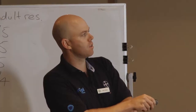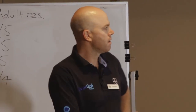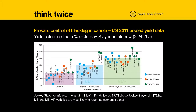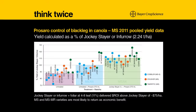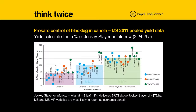If we compare everything to a percentage relative to having jockey stayer on the seed — taking that as our 100% for yield — we had an average of 2.24 tonnes across all these sites, which were MS varieties in 2011. We lost yield for doing nothing at all. Putting Prosaro on by itself, we'd already allowed infection to be present at many of these sites, so we were chasing our tail. While it's thereabouts on economics, it's not really paying off. Where it does pay off again is the full 'think twice' approach — jockey stayer plus Prosaro — giving us around 12% yield benefit.